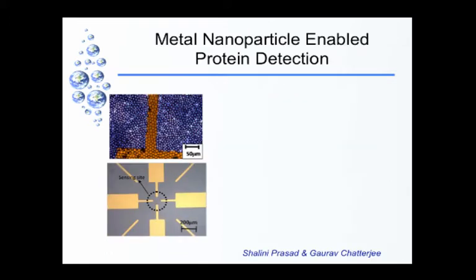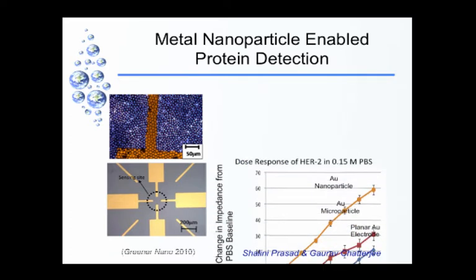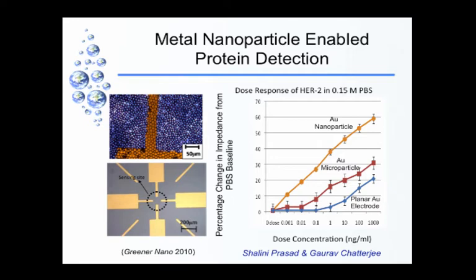If you have nanoparticles, you will have a distribution of pores oriented in all different directions. In this case we looked at gold microparticles and nanoparticles on an electrode site, and we measured change in impedance as a function of concentration of the protein HER2, which is important in different kinds of breast cancers. This protein is expressed in the body at the early stage, so if you can detect small concentrations you can diagnose breast cancer at an earlier stage.